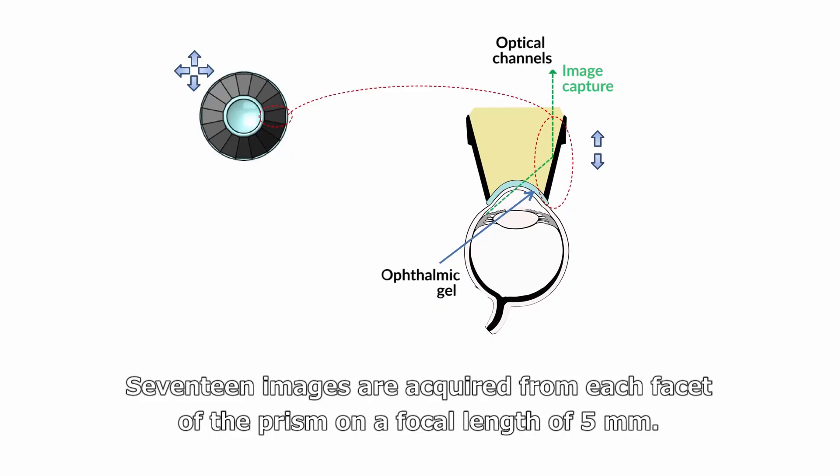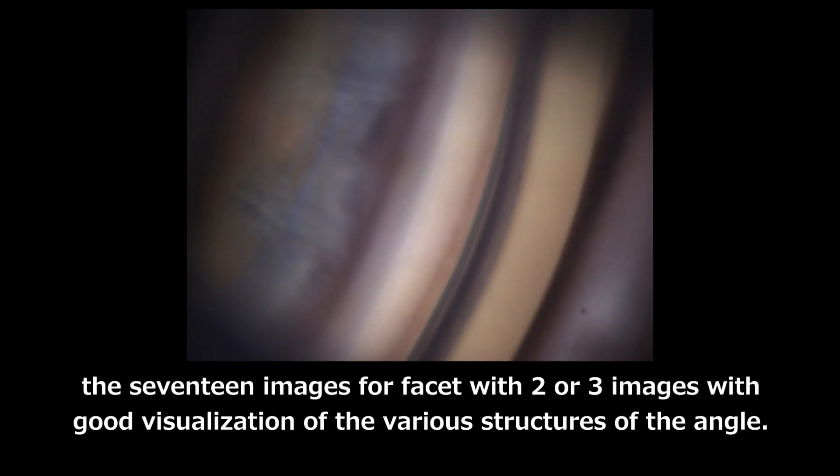17 images are required from each facet of the prism on a focal length of 5 mm. And here we can see in slow motion the 17 images for a facet with two or three images with good visualization of the various structures of the angle.